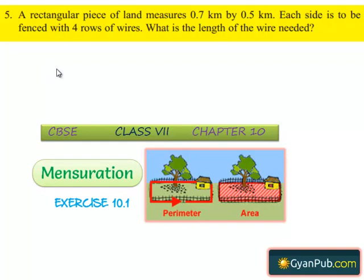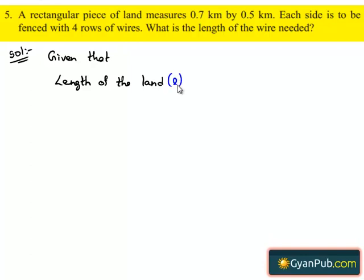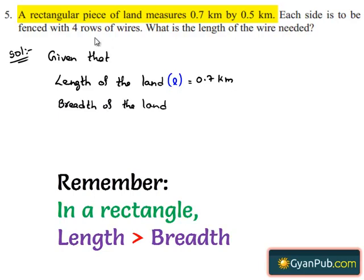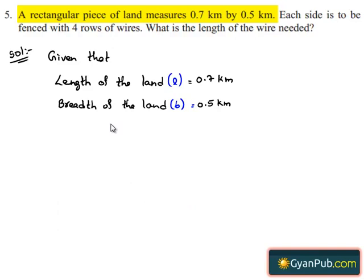Moving on to the fifth question: given that a rectangular piece of land measures 0.7 km by 0.5 km and each side is to be fenced with 4 rows of wires, we need to find the length of wire needed. The length L is equal to 0.7 km and the breadth B is equal to 0.5 km.